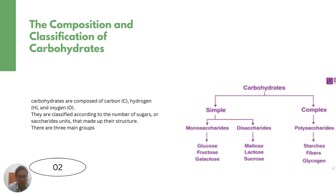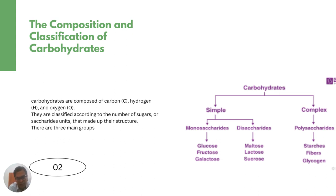There are three main groups. First is simple carbohydrates and then there is complex carbohydrates. If we talk about the simple carbohydrates, then comes the monosaccharides and disaccharides. In monosaccharides: glucose, fructose and galactose. And in disaccharides: basically maltose, lactose and sucrose.